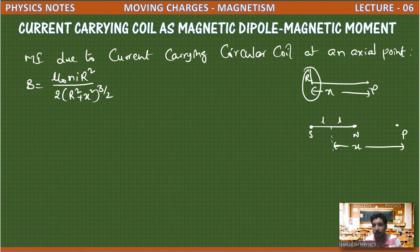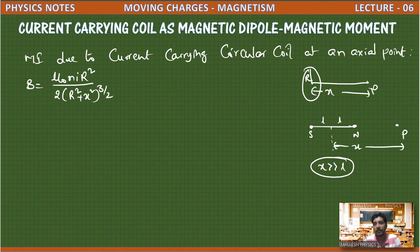The length of the magnetic dipole is comparatively less than the distance of the point from the center of the dipole. So x is much greater than l, and when we neglect l, we get the simplified formula for magnetic field.